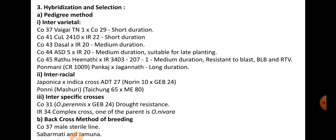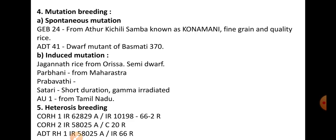Interspecific cross: CO-31 is a cross between Oryza paranees and Zeb-24 (from Oryza sativa) — developed for drought resistance. IR-34 is a complex cross involving paranees and sativa species. In backcross breeding, CO-37 is a male sterile line; Shabar, Mati, and Jamuna were developed through backcross method.